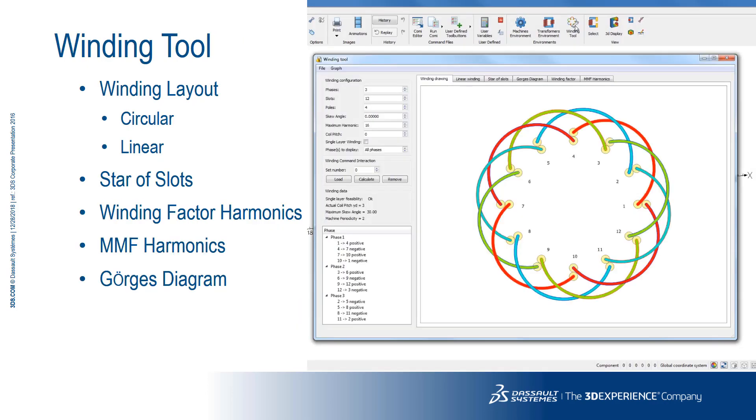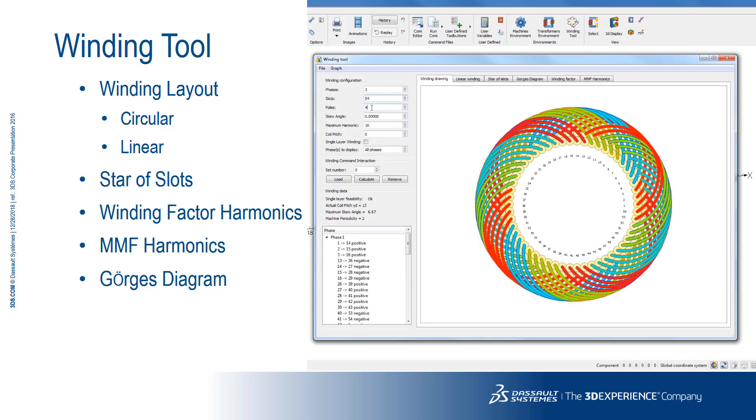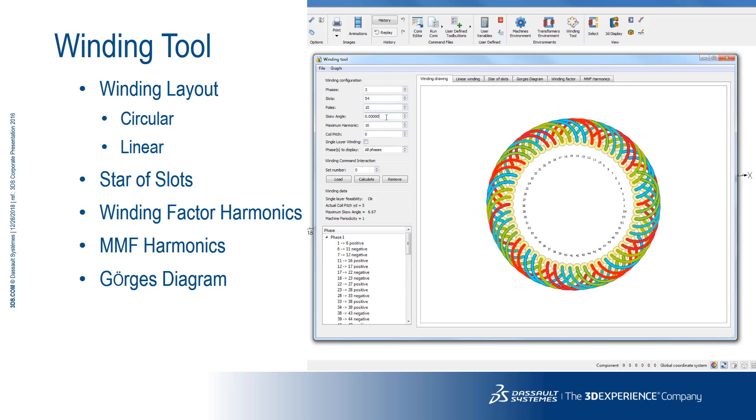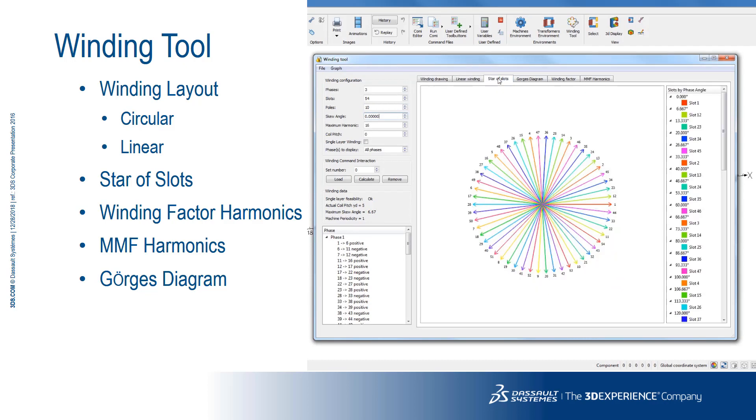The winding tool is an application dedicated to electrical machine design. It provides output on winding scenarios, which can be used directly with Opera FEA software. The main purpose of this tool is to help users assess feasibility and optimality of different winding configurations.